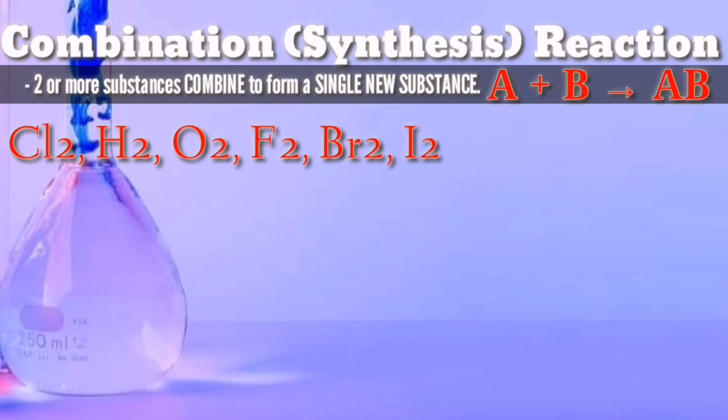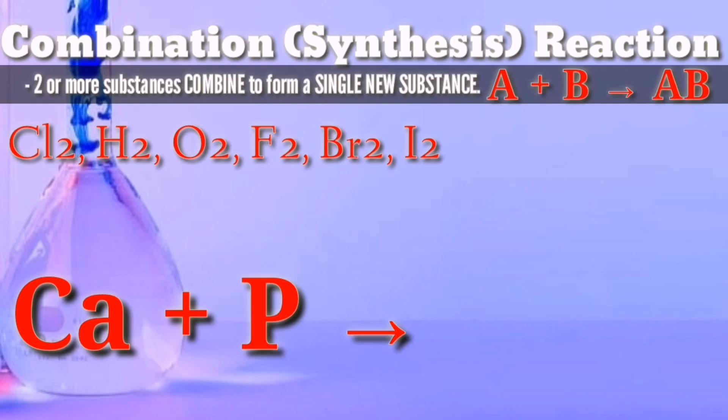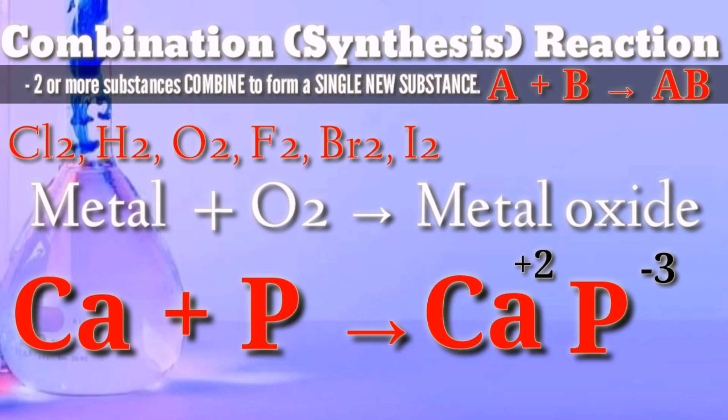Now we have calcium and phosphorus as our reactants. What product would be formed? Just write the symbols together, then consider the charges. That's positive 2 for calcium and negative 3 for phosphorus. Where did we get that? From the periodic table. After assigning the charges, now do the criss-cross method. The product formed from the reactants calcium and phosphorus is Ca₃P₂.